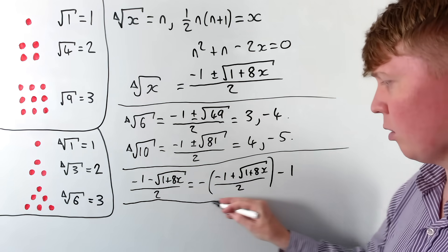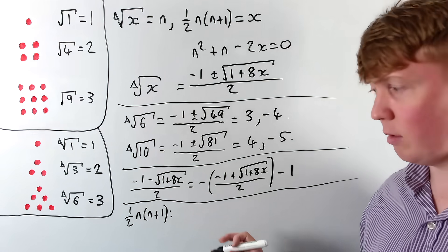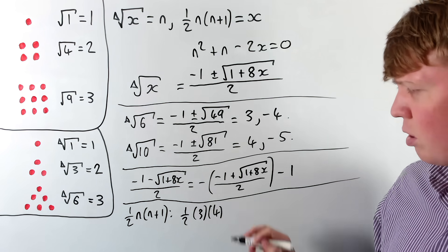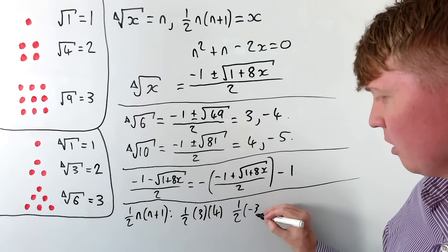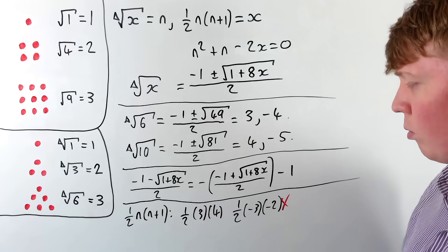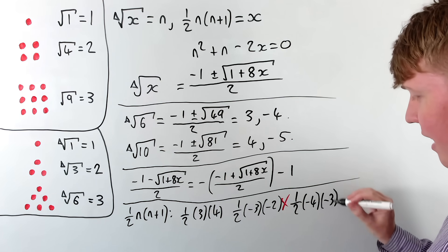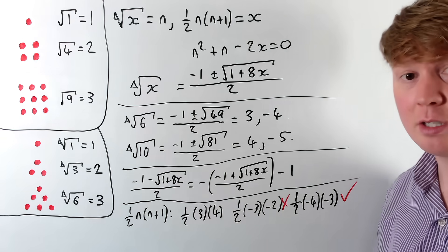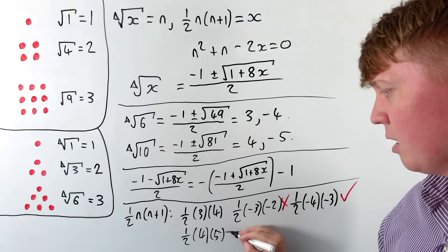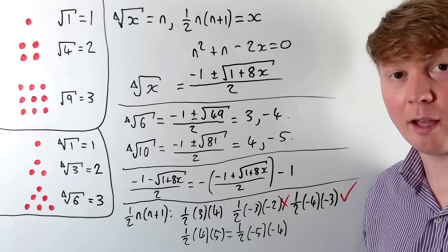Another way to understand this: substituting into our formula one half times n times n plus 1. If n is 3, we get one half times 3 times 4, which is 6. But substituting negative 3 gives one half times negative 3 times negative 2, which doesn't equal 6. You actually need n equals negative 4: one half times negative 4 times negative 3 equals one half times 3 times 4 equals 6. Similarly for the triangular root of 10: one half times 4 times 5 equals one half times negative 5 times negative 4 — the roles of 4 and 5 swap when going to the negative.